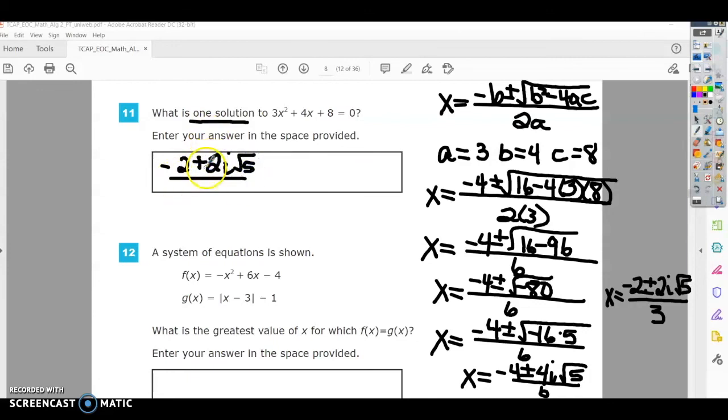or negative 2 minus 2i square root of 5 over 3. So you don't have to put both of those. When it says one solution, they just want one or the other.